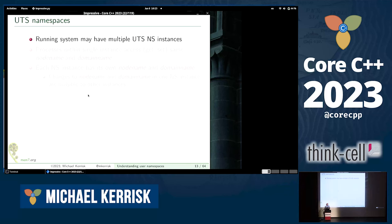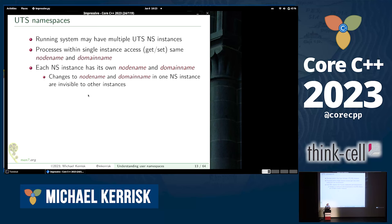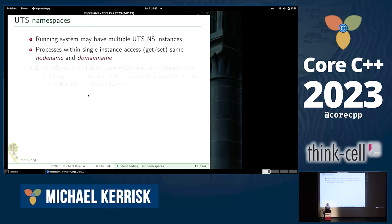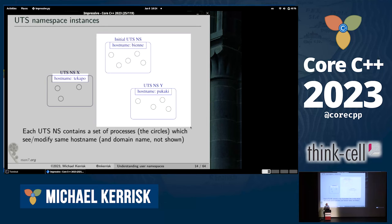On any particular Linux system, there might be multiple UTS namespace instances. Processes in a particular instance see a particular hostname and domain name, but that hostname and domain name is private to that instance — invisible to processes in other namespace instances. With three different UTS namespaces, each namespace contains some member processes; if the hostname is changed in one namespace instance, that change is visible to the other processes in that instance but not to processes in the other namespace instances.